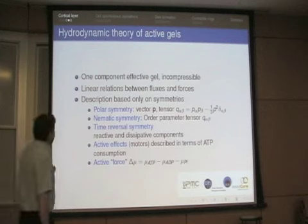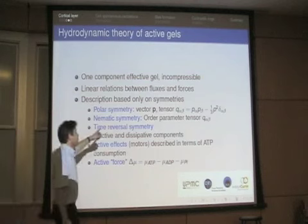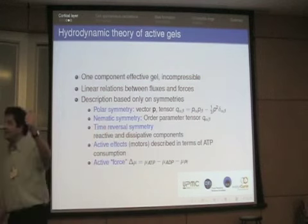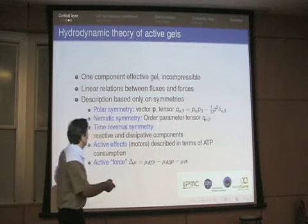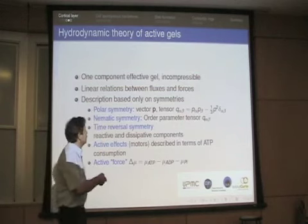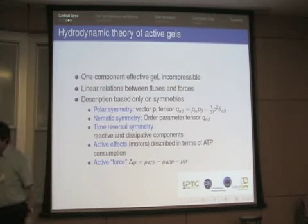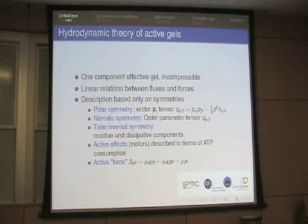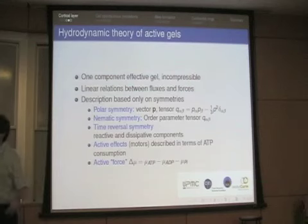Since actin is a polar filament, if filaments are locally oriented, you define an average polarization vector. Any vector in the theory must be proportional to this one. The only second-order tensor you can build from a vector is a quadrupolar tensor Q_αβ. In the cortical layer, actin filaments are often randomly oriented — half in one direction, half the other — so it's nematic, not polar ordering. In this case the polarization vector is zero, and you consider the average quadrupolar tensor, the nematic order parameter.